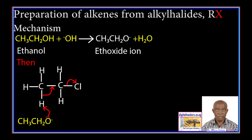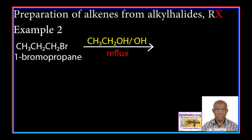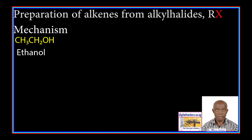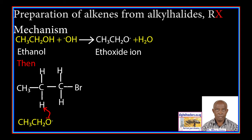A double bond forms as the bond between the carbon atom and the chlorine atom breaks to form ethene. Example 2: 1-bromopropane reacts with ethanol in the presence of potassium hydroxide to form propene. In the mechanism, ethanol reacts with the hydroxide ion to form an ethoxide ion and water. The ethoxide ion removes a hydrogen atom from the carbon next to the one carrying the bromine atom, forming a double bond between the two carbon atoms as the carbon–bromine bond breaks, forming propene.